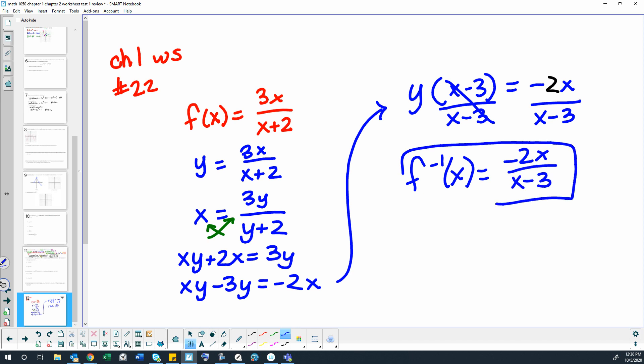So our inverse function is negative 2x over x minus 3. Now sometimes we use this kind of problem to help you figure out domain and range. So in our original function, the domain is x cannot equal negative 2.